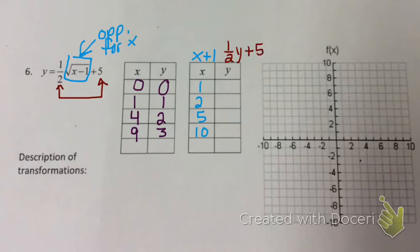Looking at my first y value of 0, I'm going to multiply that times 1 half, it gives me 0, plus 5, that equals 5. And then, 1 times 1 half gives me 0.5, plus 5 gives me 5.5.